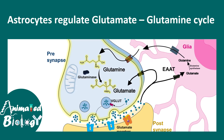When a pre-synaptic action potential reaches its terminal, it leads to glutamate release in the synapse. Post-synaptic glutamate receptors bind to glutamate, leading to a post-synaptic response. Glutamate is generated from glutamine with the help of the enzyme glutaminase in the pre-synaptic terminal. Glutamine is provided by the astrocytes. When glutamate is released in the synaptic cleft, astrocytes take it up via excitatory amino acid transporters and convert it to glutamine using glutamine synthetase, which is then channeled back to the neuron to synthesize more glutamate.